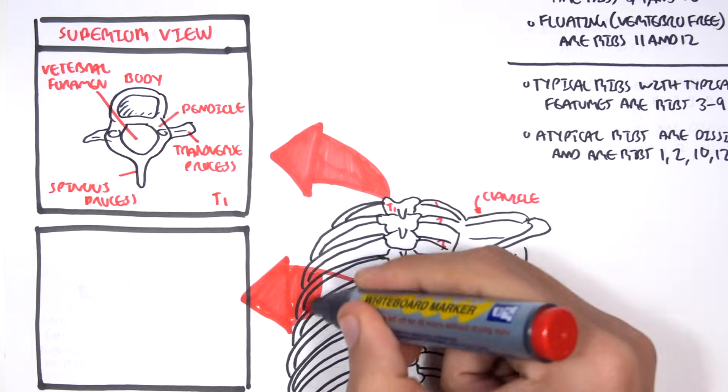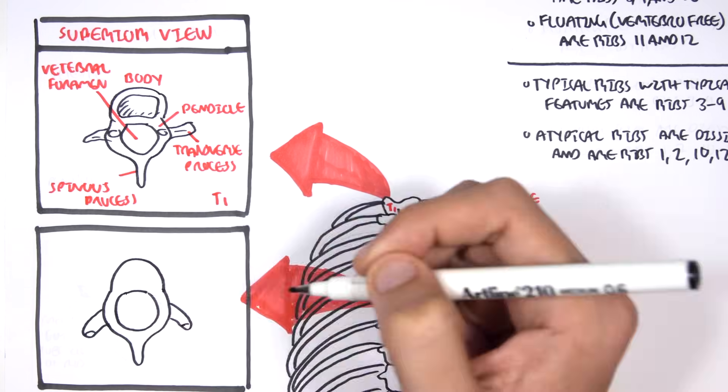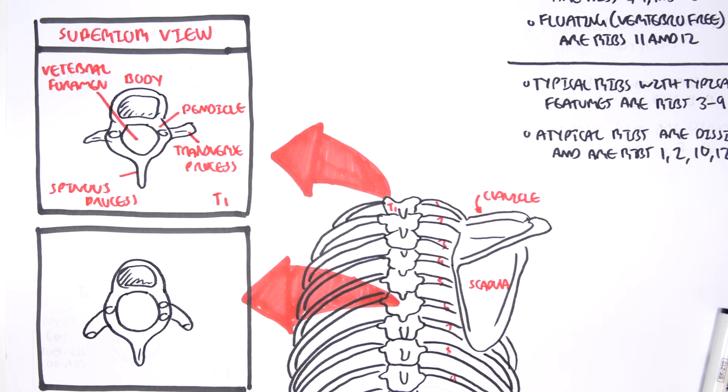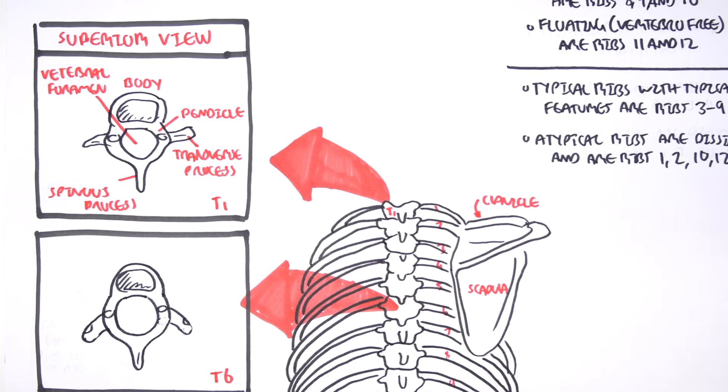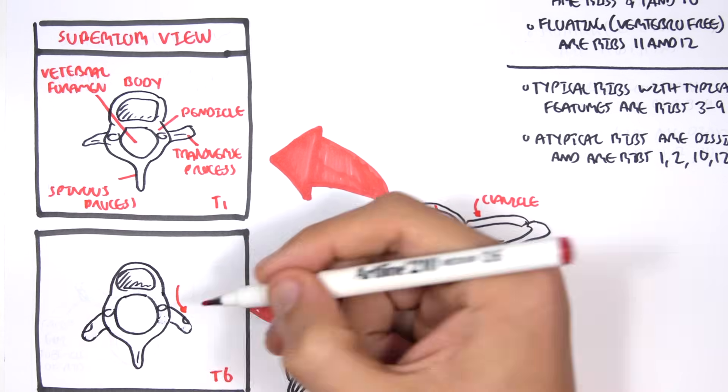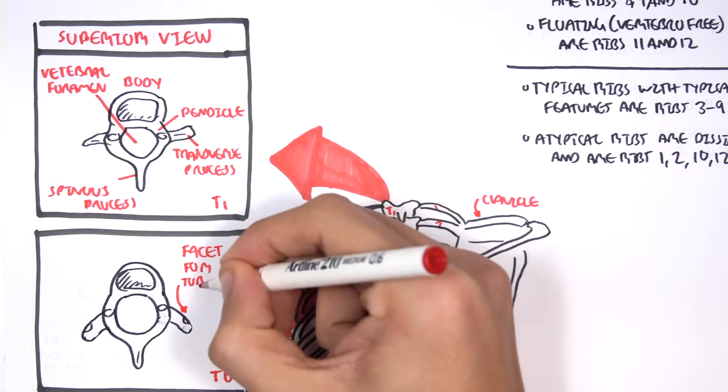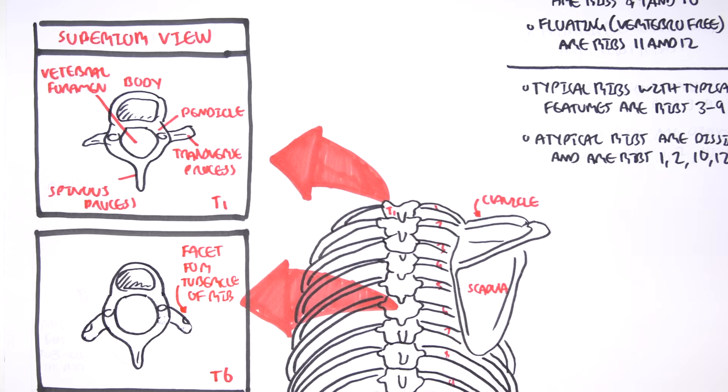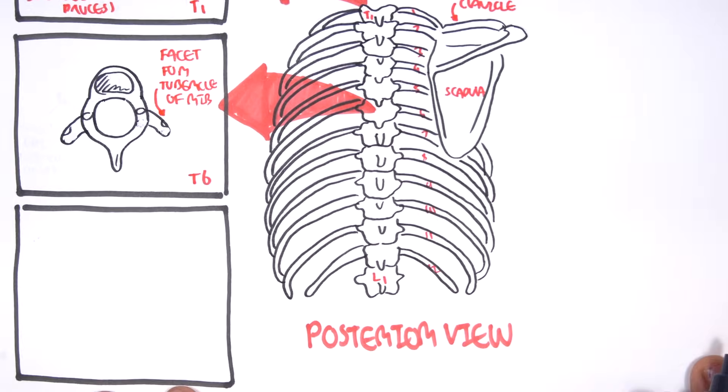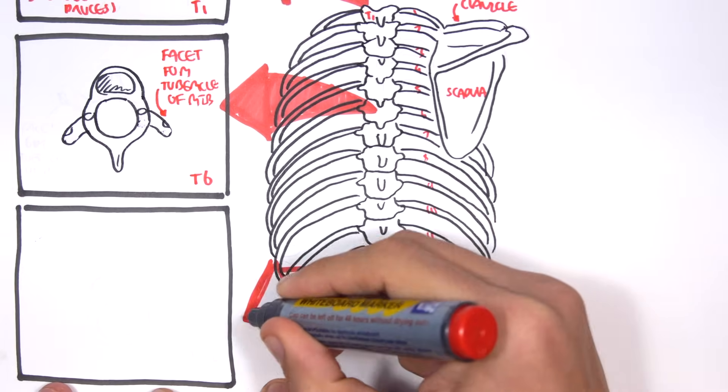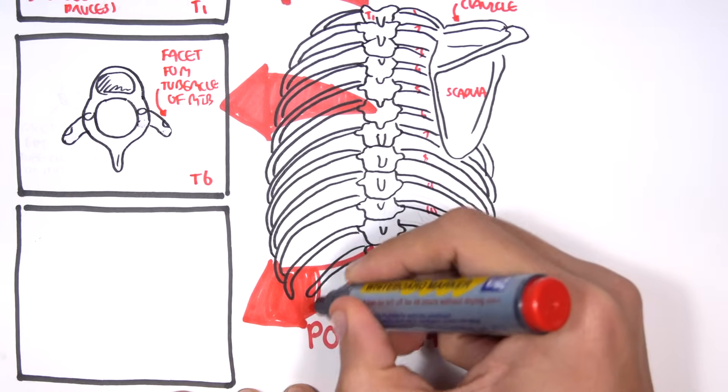So here is the thoracic vertebra 6, T6, which is very similar to the previous vertebra. But something else that is very important to introduce is the facets where ribs articulate. And this is specifically for the thoracic vertebrae, because they have ribs coming off them.